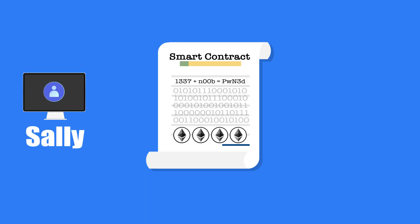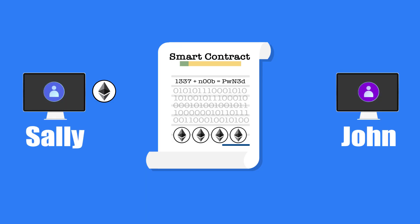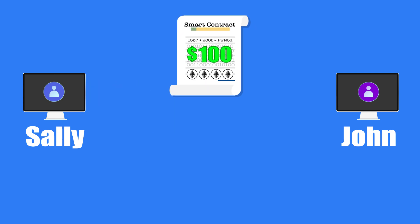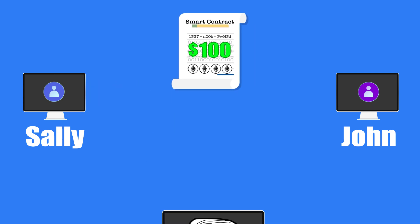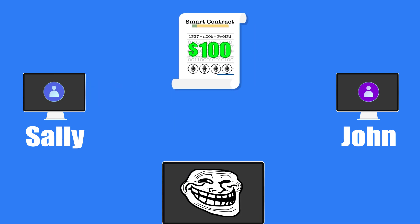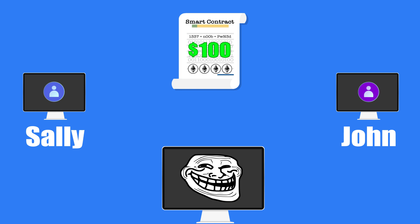But what if there are trolls that program loopholes into smart contracts? Let's say Sally and John locked up $100 into a smart contract. Unknowingly to them, the contract code has been written by a troll. Once the contract executes, the money goes straight to the troll's wallet instead of theirs.